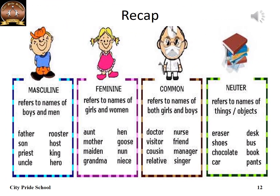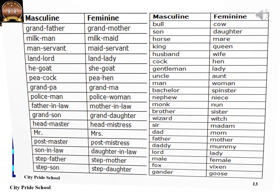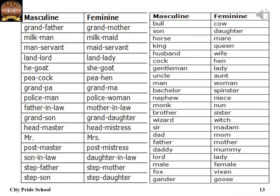Let's have a recap of genders. Masculine gender refers to names of males. Feminine gender refers to names of females. Common gender refers to both males and females. And neuter gender refers to non-living things or objects. Here is a list of masculine and feminine genders — go through the list and learn the opposite genders. Thank you.